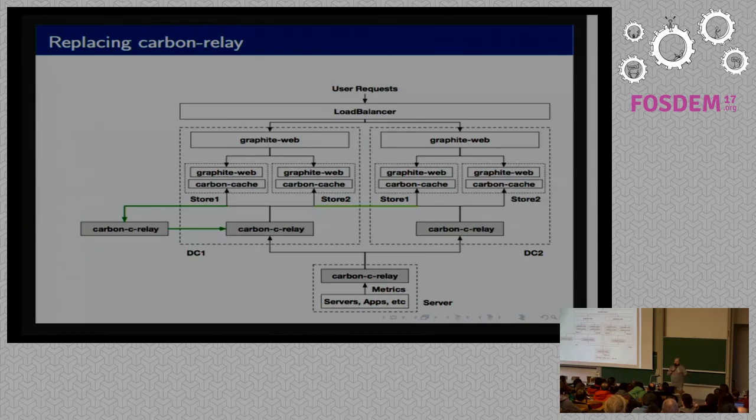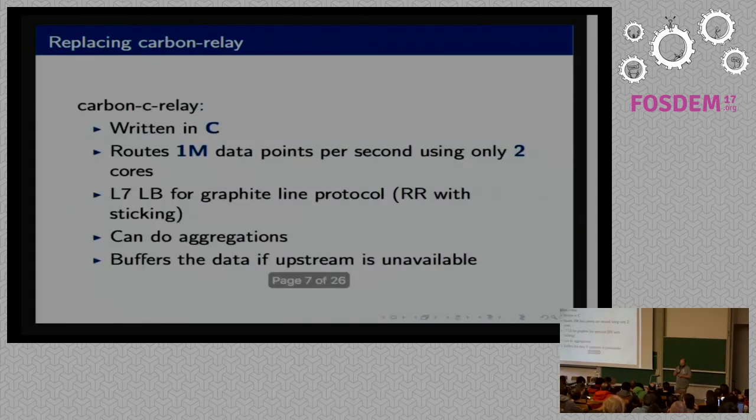We also decided to simplify our workflow. We decided to put Carbon C Relay as close as possible to the actual metric producer. All our servers have Carbon C Relay installed locally, and we just tell our developers if you want to send the data, just send it to localhost, this port number, or use this Unix socket. We'll take care of how it will reach the storage, even in case of failure. Then we set up centralized Carbon C Relay boxes which handled actual load balancing, and they also do the copy to the second data center and all the replication stuff.